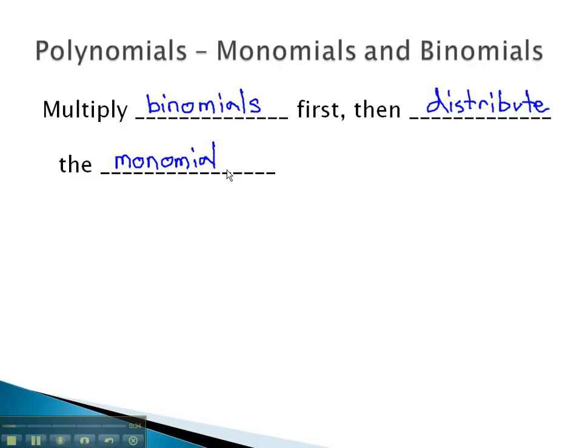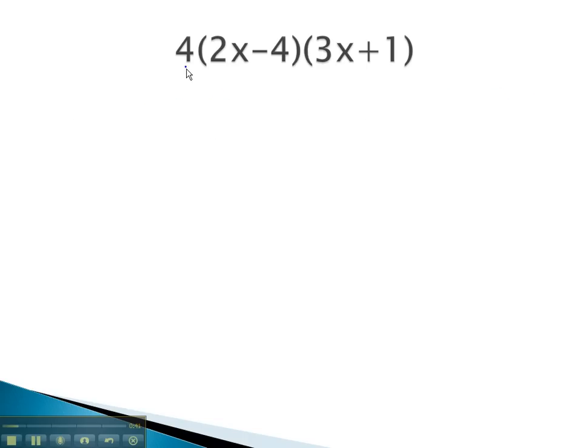Let's take a look at an example where we can see this process work out. In this problem, we have the monomial times the two binomials.